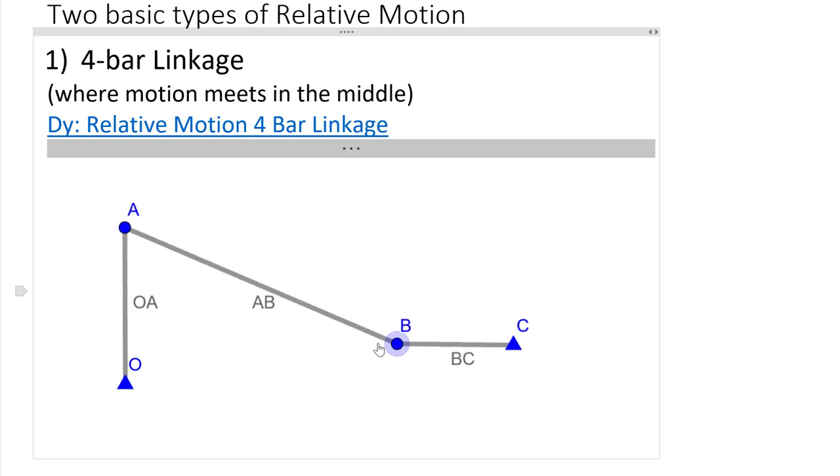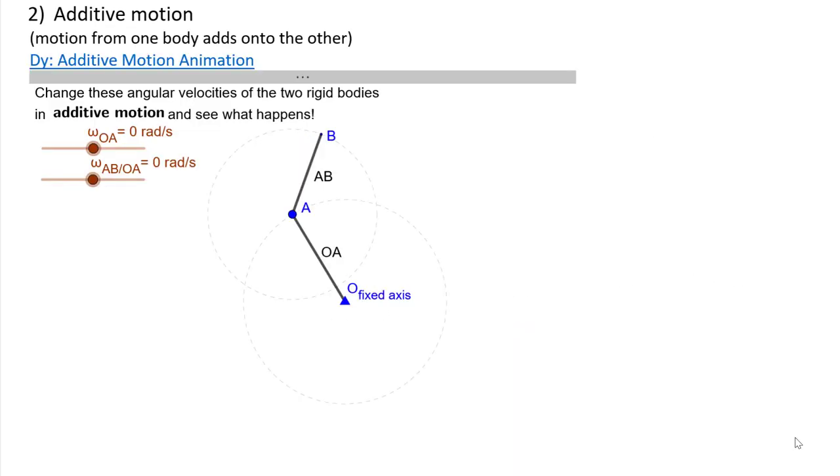One thing to remember in these kind of problems: we never need to add together our omegas or alphas. While they're all going to be related due to the dimensions of this four bar linkage, we're not going to need to ever add them. That's going to be a strict contrast between these four bar linkages and also the additive motion case which we'll look at next.